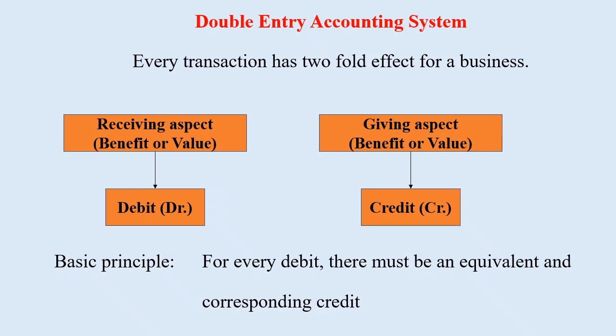At present, business units follow the double entry accounting system. As per this system, every transaction has a twofold effect for a business: a benefit or value receiving aspect, and a benefit or value giving aspect.